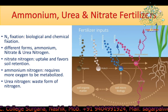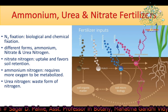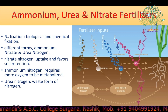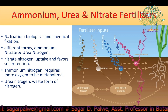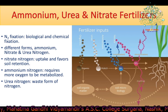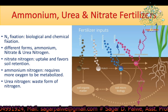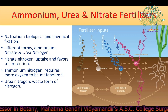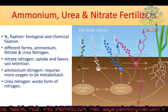Nitrogen can only be fixed and made available to plants through biological and chemical nitrogen fixation, such as from nitrogen fertilizers, and also through atmospheric nitrogen addition. Nitrogen comes in different forms: ammonium, nitrate, and urea nitrogen. Nitrate nitrogen is the most abundant, with easy uptake and favorable soil retention, unlike ammonium nitrogen which requires more oxygen to be metabolized in the roots where it reacts with sugars. Urea nitrogen is a waste form of nitrogen.